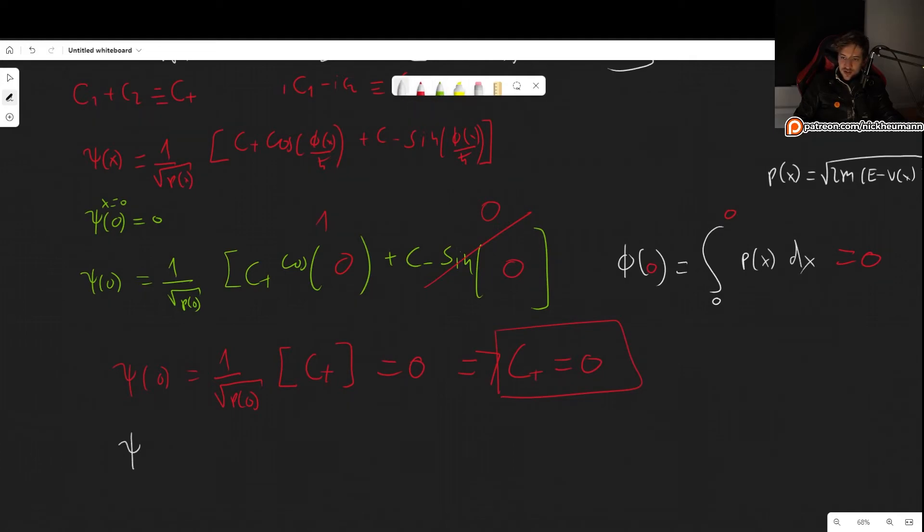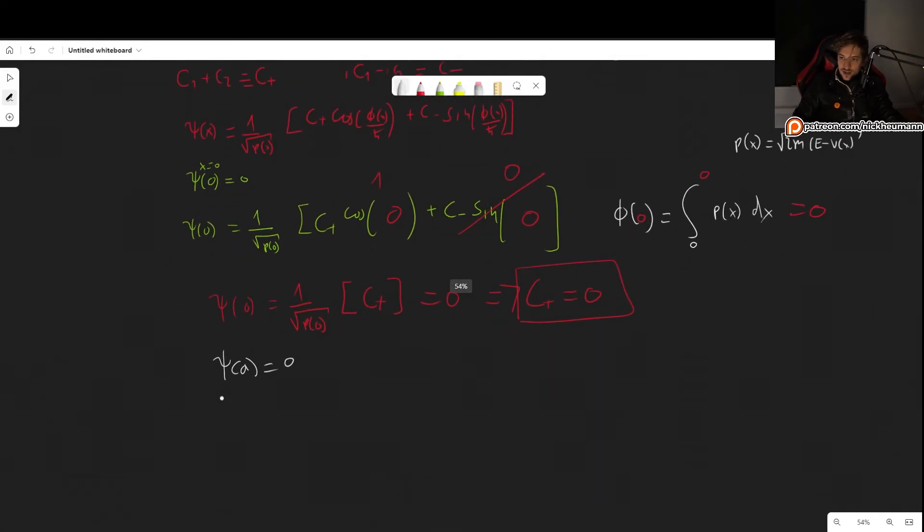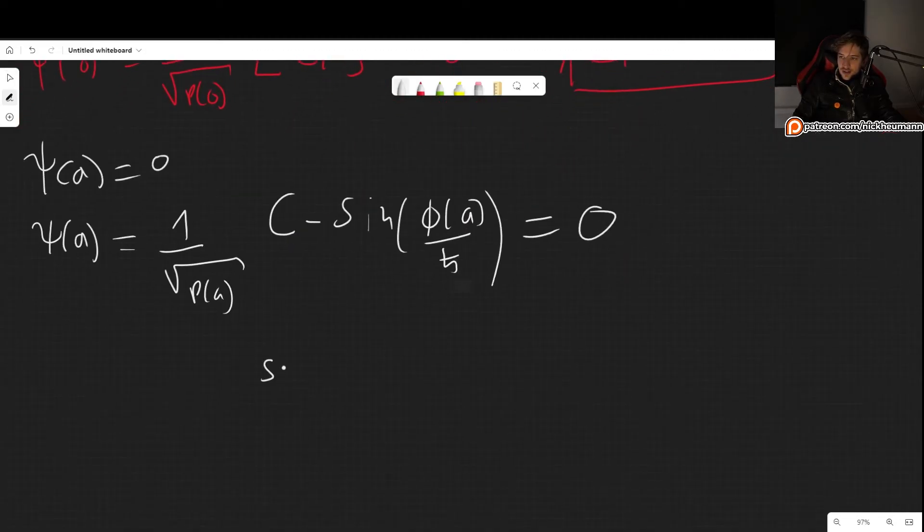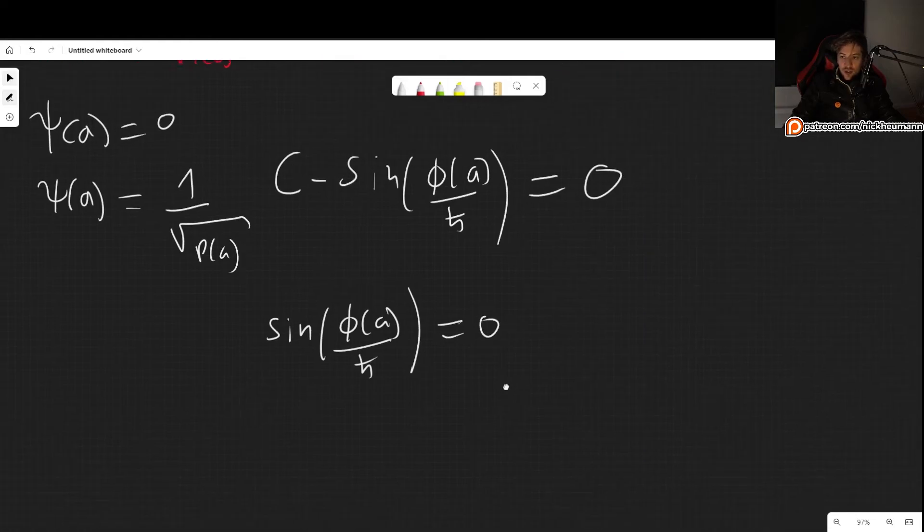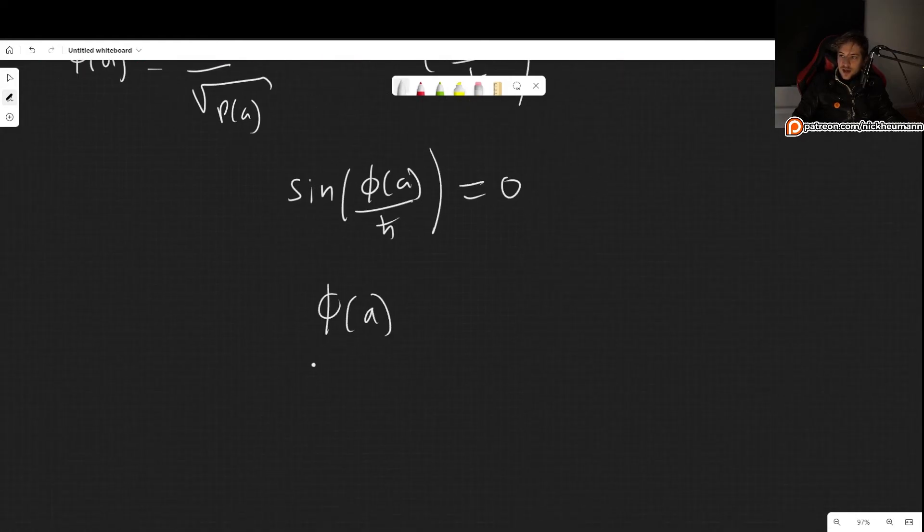Okay, now let's go for the second condition. So psi of a has to be equal to zero. Now, all that remains from our wave function is psi of a, it is now one over square root of p of a, times c minus sine of phi of a over h bar. And this has to be equal to zero. So for this to be equal to zero, we need the sine of phi of a over h bar to be equal to zero, which means that phi of a over h bar has to be equal to n pi.